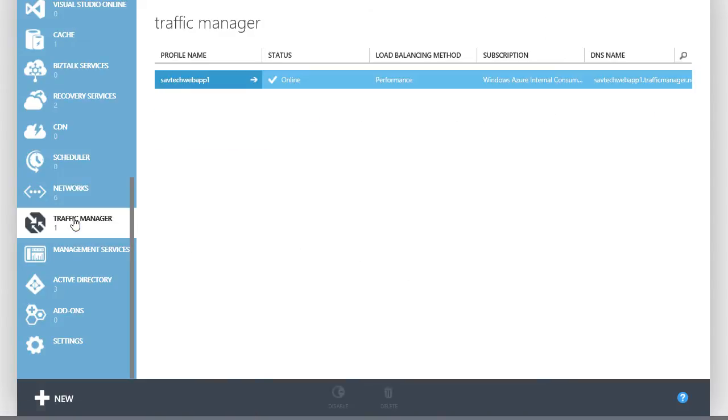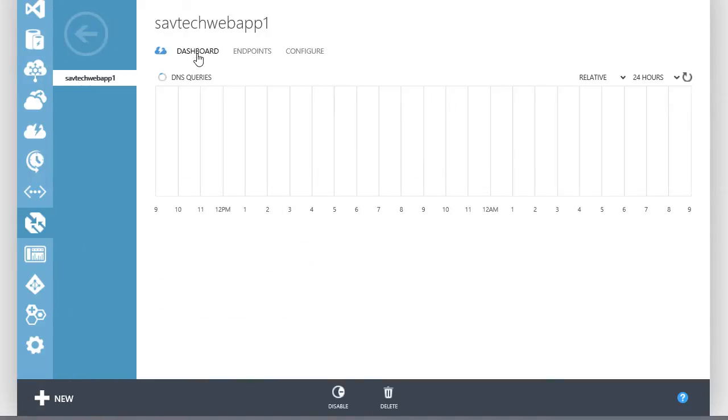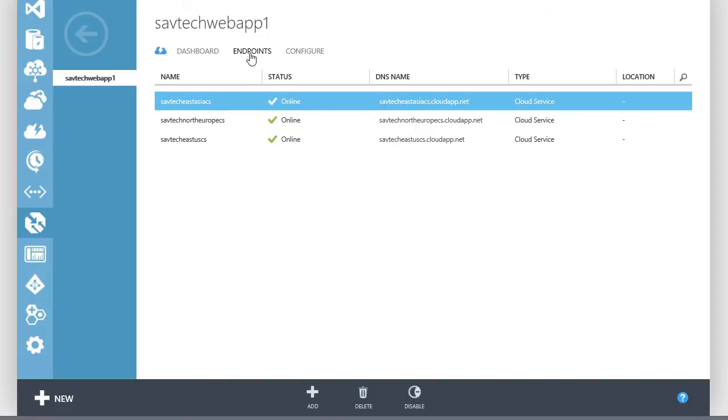If I go to my traffic manager, I have a single profile configured for the SavTech Web App 1. If I select that, I can see an overview of how much it's been used, which is really not a lot. But I can see the endpoints. So I configure as the endpoints the cloud services that it's going to point to. So it's pointing to my East Asia, North Europe, and East US cloud services.